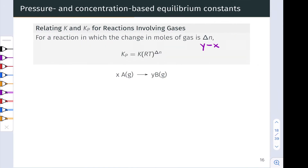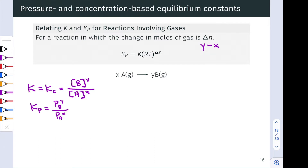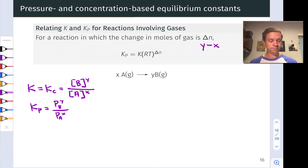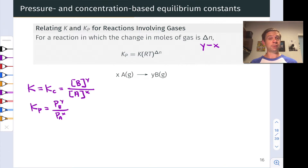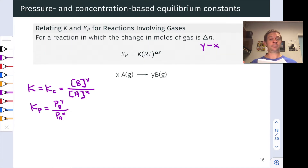We can think about the reaction quotient in terms of concentrations or partial pressures, and those are directly proportional to one another for gas phase reactions, thanks to the ideal gas model. So we could write K in two different ways: as the concentration of B to the y power divided by the concentration of A to the x power, or in terms of partial pressures, P_B to the y power divided by P_A to the x power at equilibrium. These values will be different numerically, so there's a relationship between K_c and K_p that we can derive.